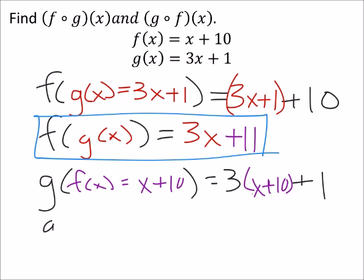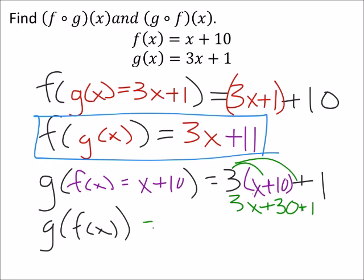So, finally, for this one, g of f of x, we can distribute the 3, and that gives us 3x plus 30, plus 1, which would be 3x plus 31. And that would be the second one.